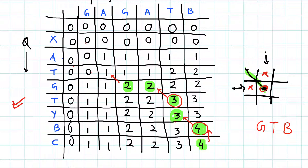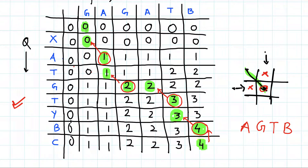We move diagonally up and reach here. Now a and t are not equal, so we see its left and top cell — whichever is maximum we go there. We come here and see that a and a are equal, so we print a and go diagonally top left. We reach here and now g and x are not equal, so either we came from here or here — both are 0. We go to the 0th index and stop.